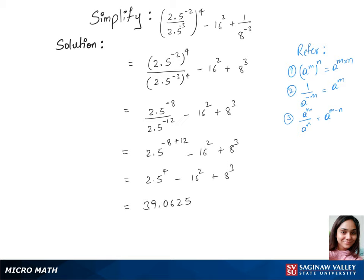In our next step we have 2.5 to the power 4 is 39.0625, minus 16 square is 256, plus 8 power 3 is 512. Let's calculate and get 295.0625, which is our final answer.